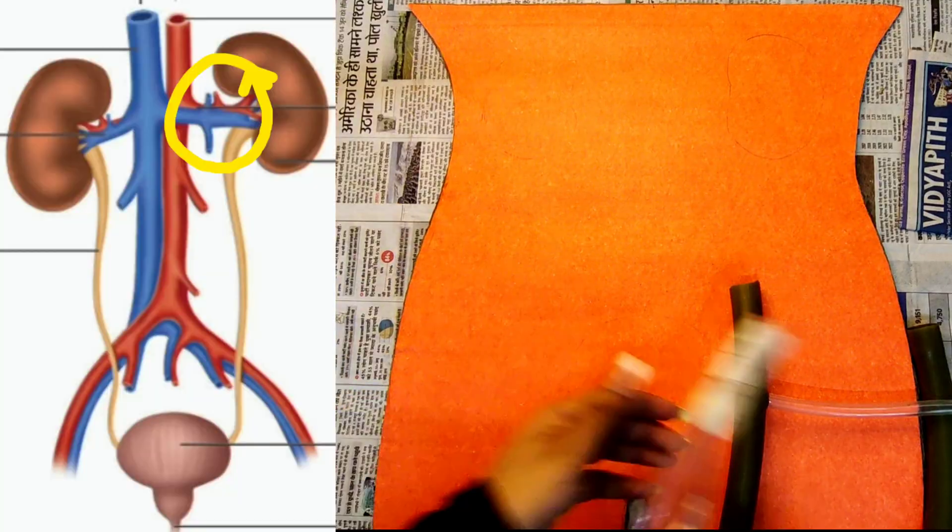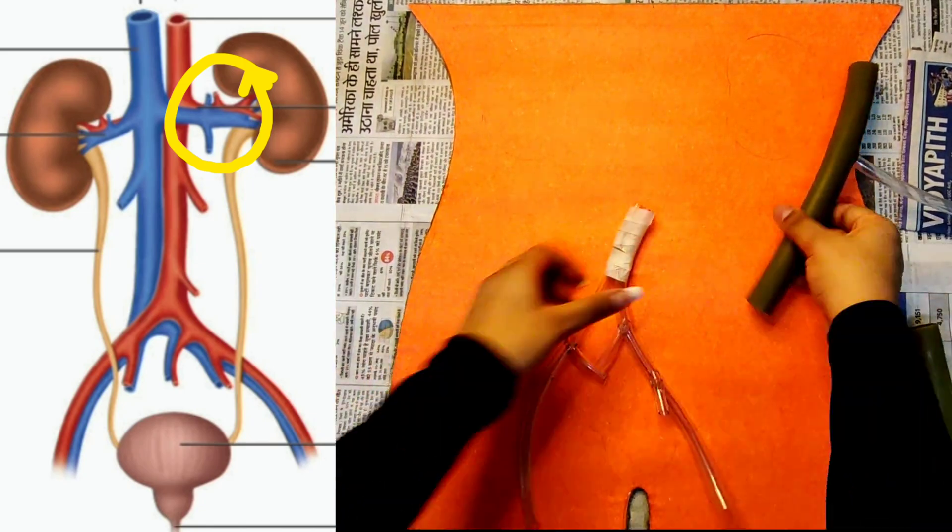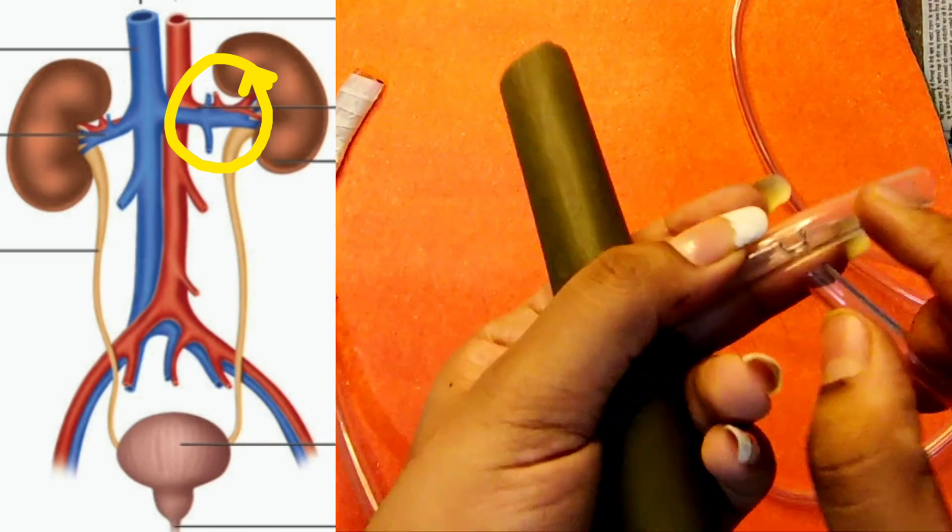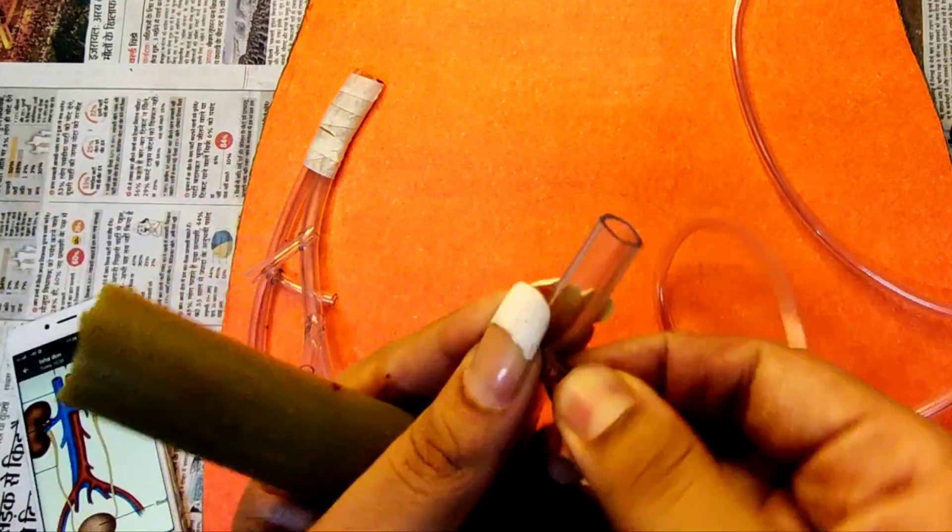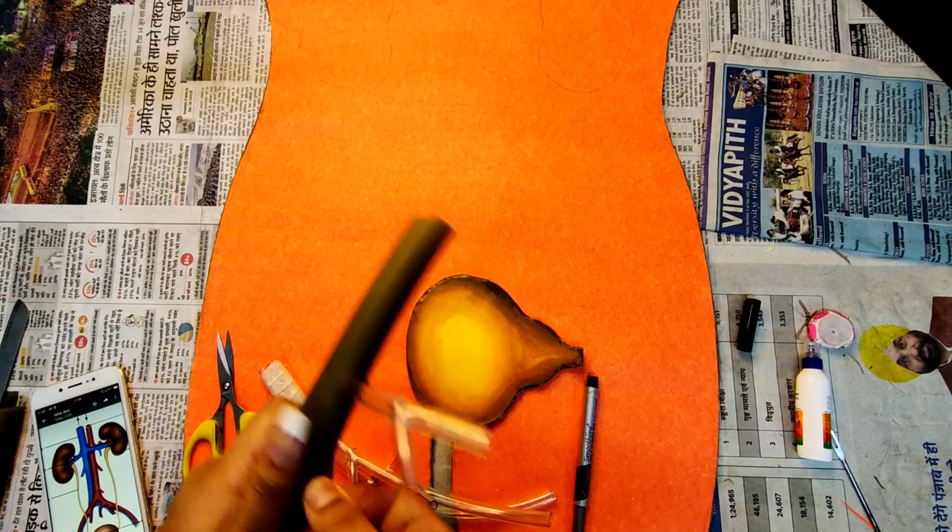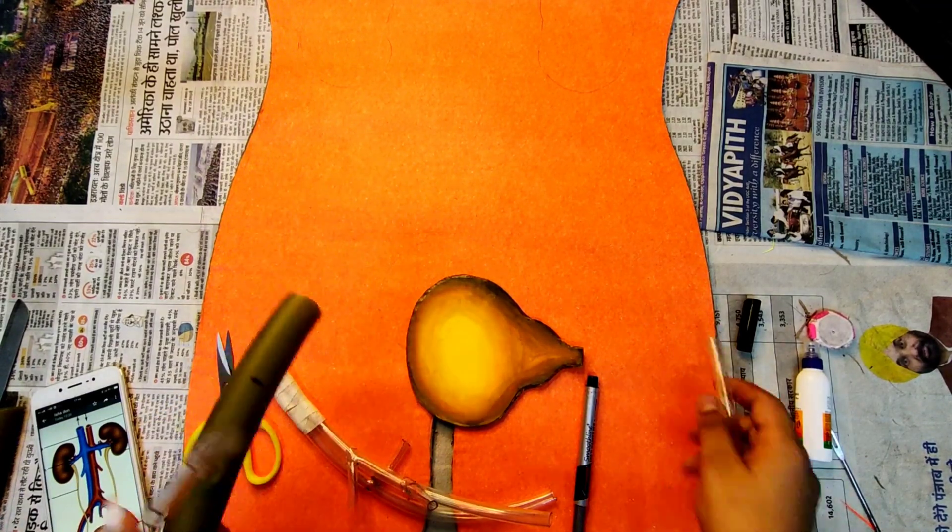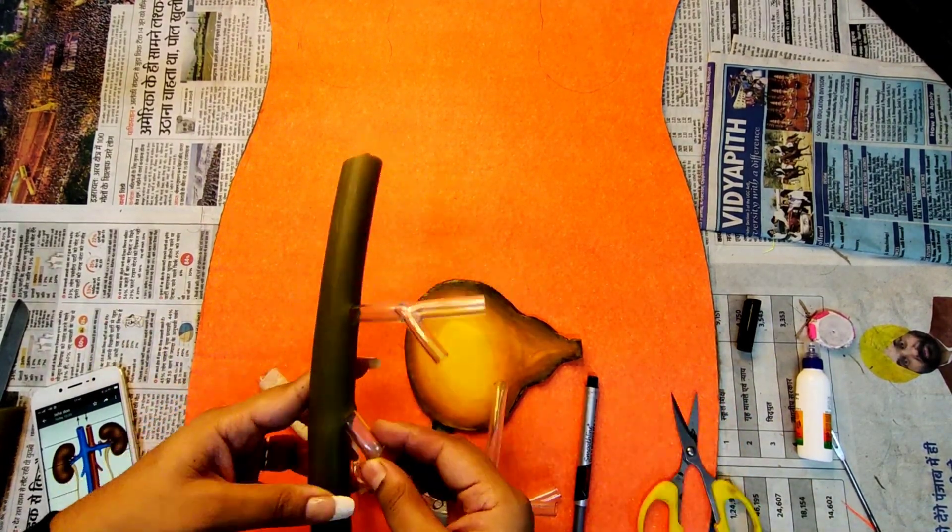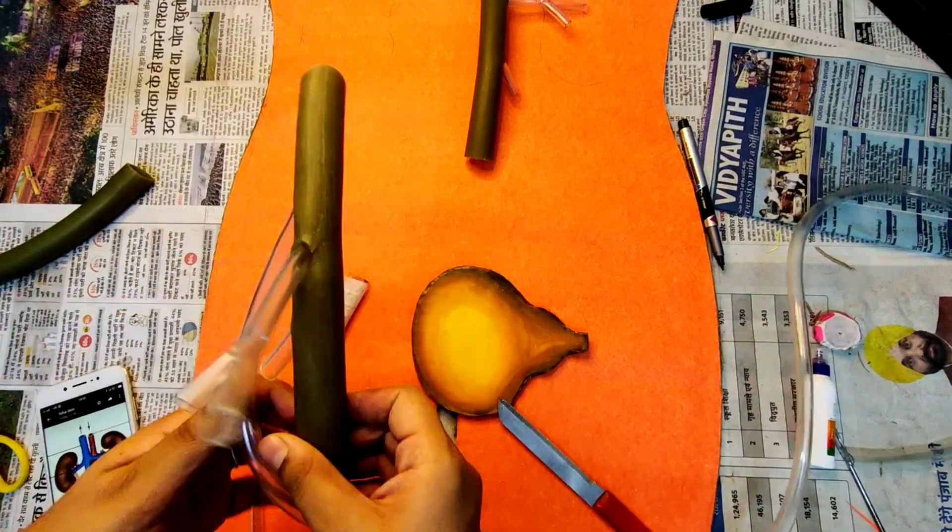Now you can see this particular yellow circle part. For every part of the artery and vein which is coming out, we're repeating the same process - just inserting small pipes into the bigger ones. Make a hole, insert a transparent or thin pipe in that, and then cut it off.